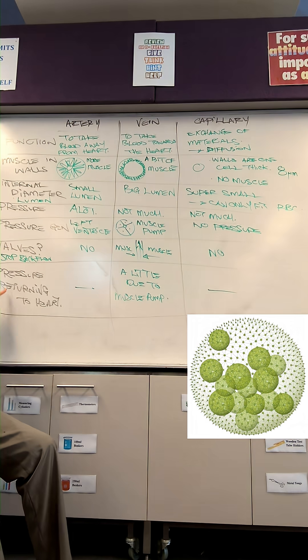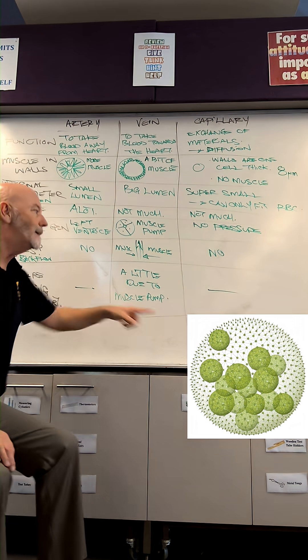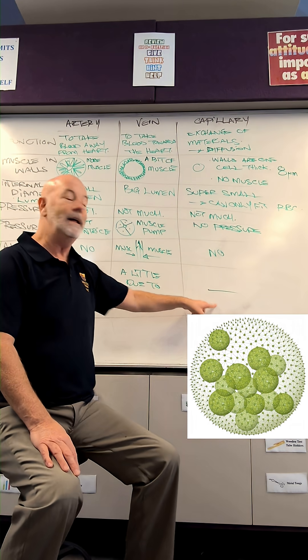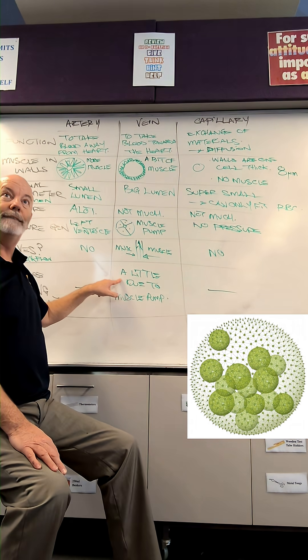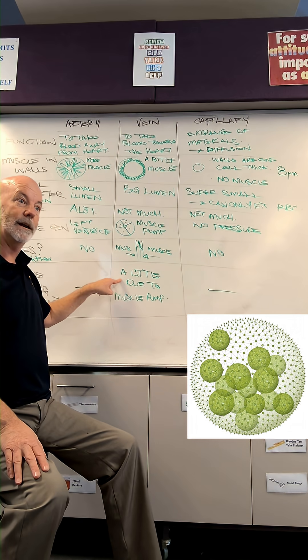So then the pressure returning to the heart. The arteries move away from the heart, not towards the heart. Capillaries are in the middle of the arteries and veins, so out of the equation. Veins only have a little bit of pressure to allow themselves to get back to the heart to start the cycle again.